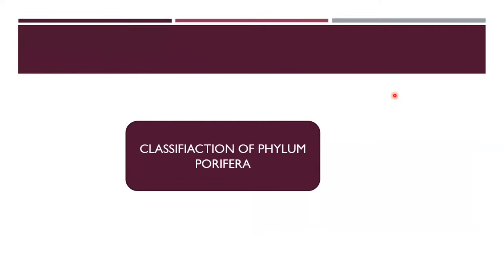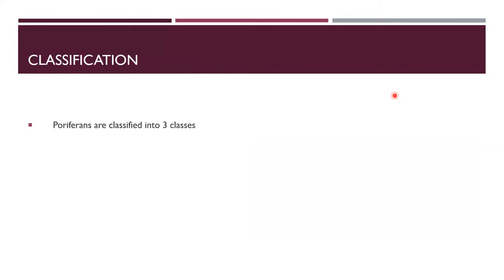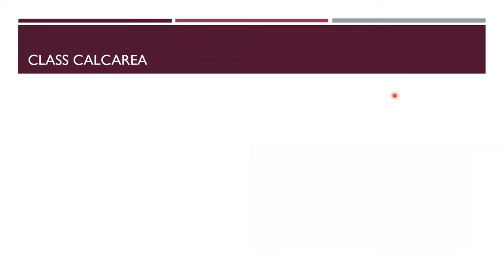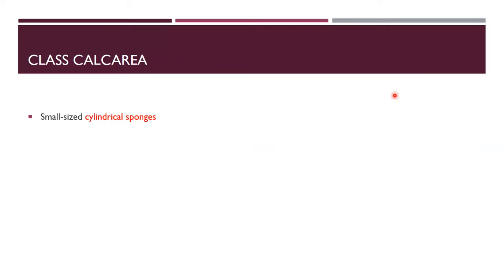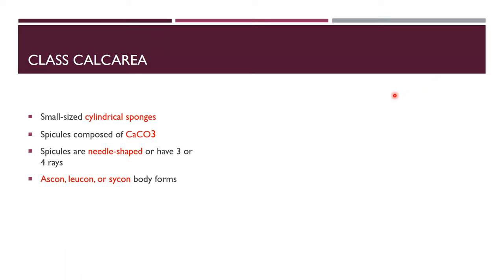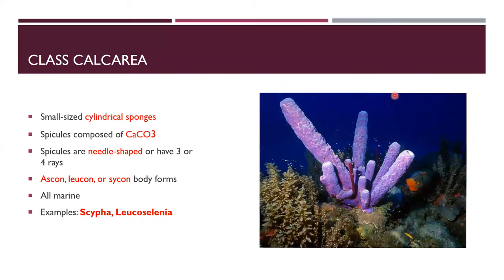Phylum Porifera has three classes. Class Calcarea: small cylindrical sponges with calcareous spicules having three or four rays. Body forms include ascon, leucon, or sycon. All are marine. Examples include Scypha and Leucosolenia.